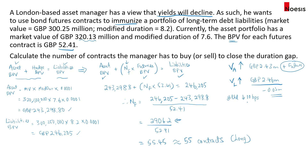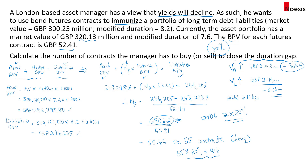This approach represents a 100% hedge by closing the full duration gap. If the fund manager only wants to hedge 80% of the gap, you would take 80% of the numerator: 2,906.2 times 80%, divided by 52.41. Alternatively, you could take 55 contracts times 80%, which comes out to about 44 contracts — giving you an 80% hedge ratio.